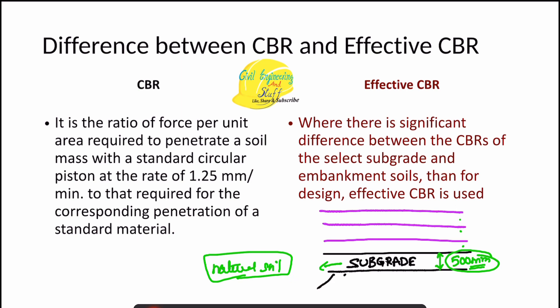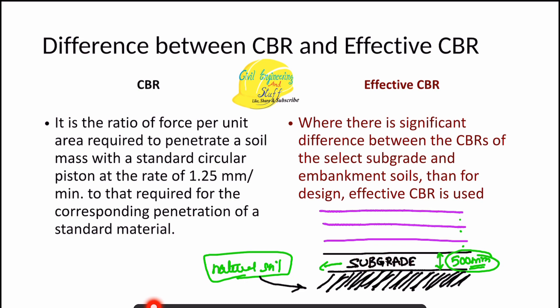Below the 500 mm subgrade is the same natural soil. However, it may happen at a site that the CBR value of the soil subgrade differs from that of the embankment or soil below it. This can occur because the subgrade soil may require soil stabilization techniques, which increase the CBR value significantly.